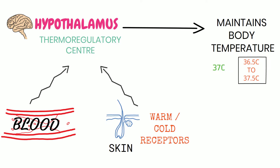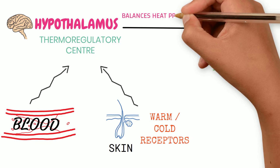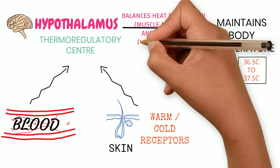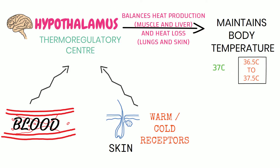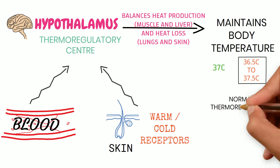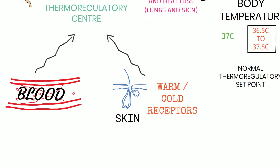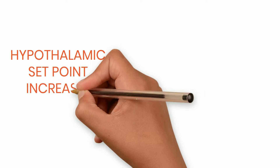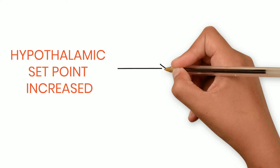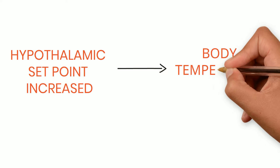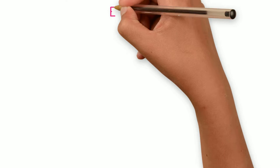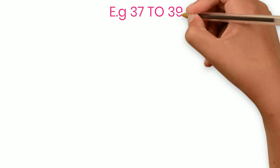The hypothalamus balances heat production and heat loss in the body to maintain body temperature. This 37°C is the normal thermoregulatory hypothalamic set point. When this hypothalamic set point is increased for whatever reason, body temperature also increases by several additional mechanisms. For example, when the hypothalamic set point is increased from 37°C to 39.5°C, body temperature also increases to 39.5°C.